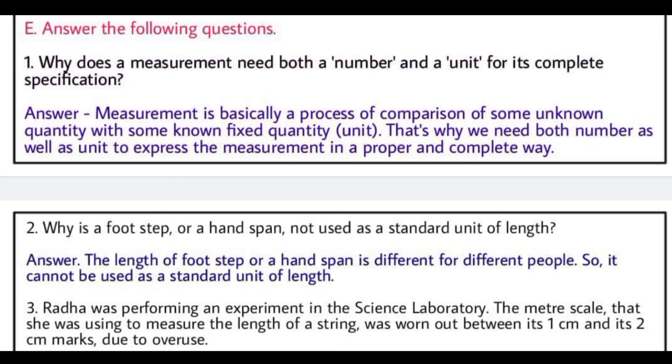Now long answer questions. First one is, how does a measurement need both a number and a unit for its complete specification? That's why we need both number as well as unit to express the measurement in a proper and complete way.